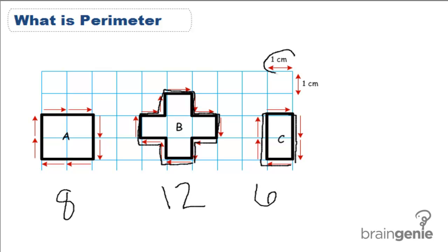We can't forget our units, and in this case, each box meant 1 centimeter. So, A is 8 centimeters, B is 12 centimeters, and C is 6 centimeters.